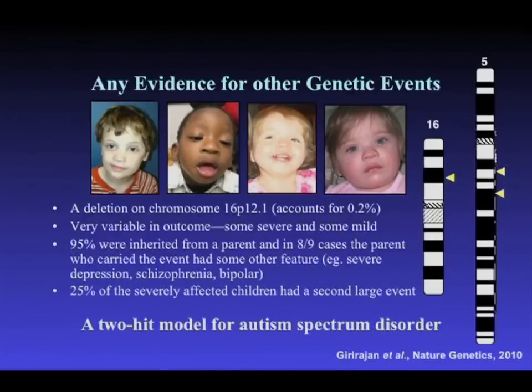This is work of Santosh Girirajan in my group who discovered a deletion on chromosome 16p12.1 — about 500 kilobases in size, involving 10 genes — with an odds ratio on the order of 15, meaning you almost never saw it in controls but saw it quite often in cases of intellectual disability. It was again a microdeletion very variable in its outcome — sometimes children were fairly mildly affected, others severely mentally handicapped.